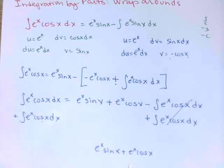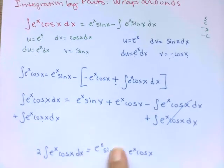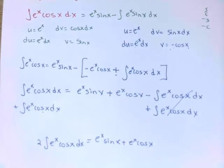Right, so I have two of them added together. I have two integral e to the x cosine x dx, and that equals e to the x sine x plus e to the x cosine x.